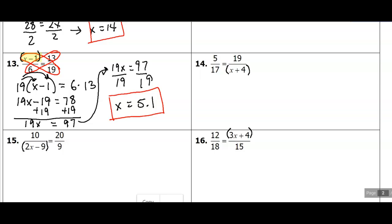So x is 5.1. And if I plugged 5.1 in here, I would get 4.1 over 6. If I calculated that on my calculator, 4.1 divided by 6, it should give me the same as 13 divided by 19. So you could check that on your calculator if you wanted to.